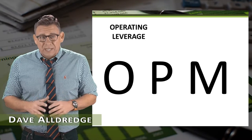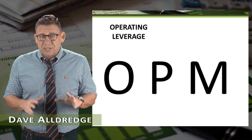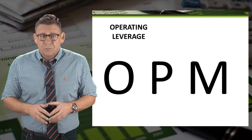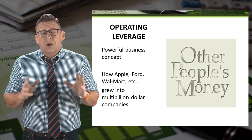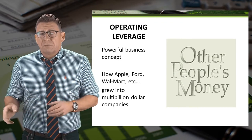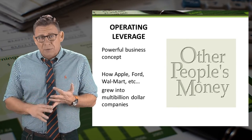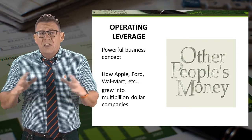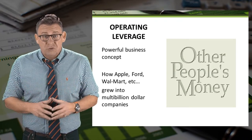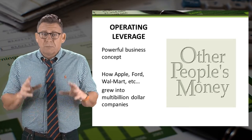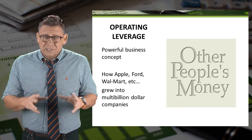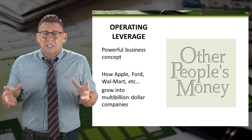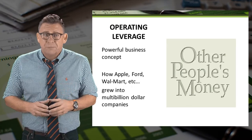OPM is a very important idea that often separates successful companies from those that aren't. OPM stands for other people's money, and it's how Apple, Ford, Walmart, and other big companies you've heard of have grown from small businesses started in a garage to multi-billion dollar organizations that they are today.